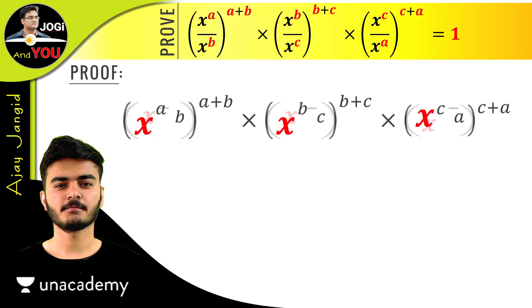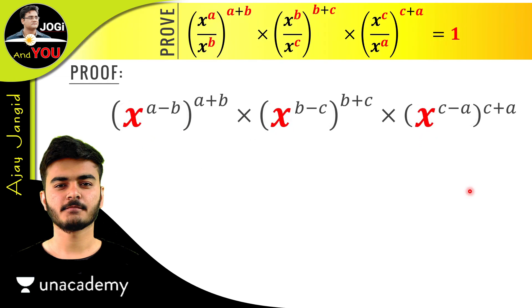So convert it according to our rule—here we got powers in a new form. Now we have one more rule: if there's any power on the base, that means here we have x^(a-b) and here power on the power (a+b). If we have power on the power, then it will be multiplied with each other. It's another rule of powers and exponents.